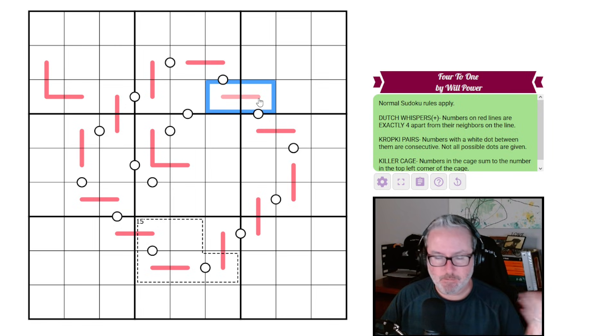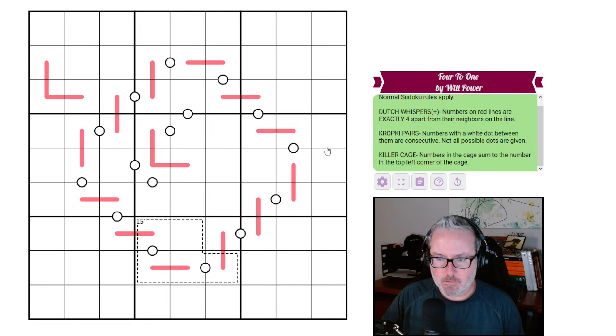So then we have Kropke pairs. Numbers with a white dot between them are consecutive and not all possible dots are given. And then the killer cage. Numbers in the cage sum to the number in the top left corner of the cage. So these guys add to 15. Nothing crazy, just a little tweak on the Dutch Whispers there with the making it exactly. Let's get at it.